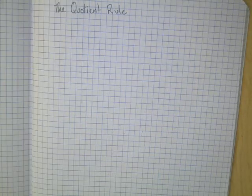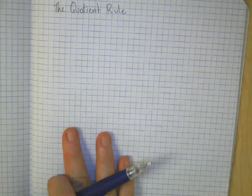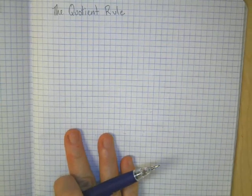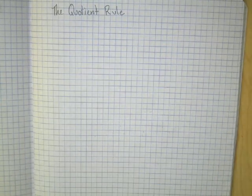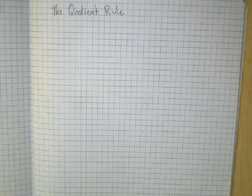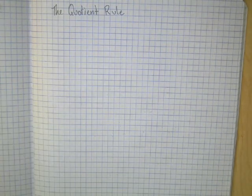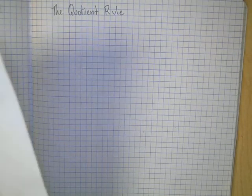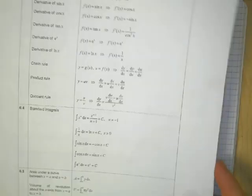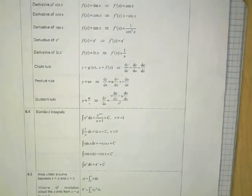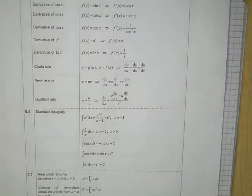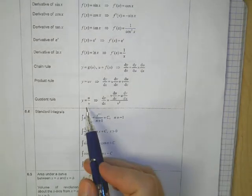Alright, time to talk about the quotient rule. Quotient rule — kind of a messy rule, and hopefully we won't have to use it all that often, but it is in the formula packet, so we do need to be familiar with it and be able to use it if it becomes necessary. Notice this is what is in the formula packet.